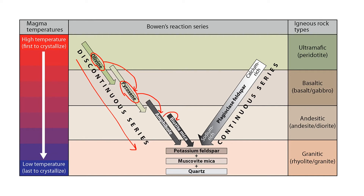Therefore, a rock that has olivine and hornblende is not in an equilibrium state, since these are formed at different conditions. Stable pairs could be olivine and pyroxene, or hornblende and biotite, for example.